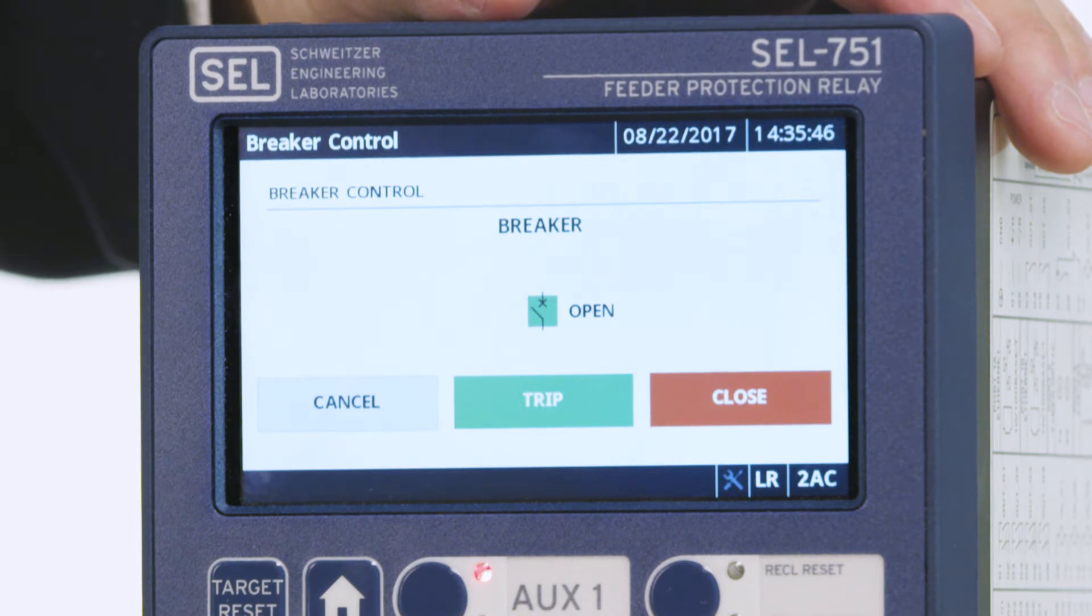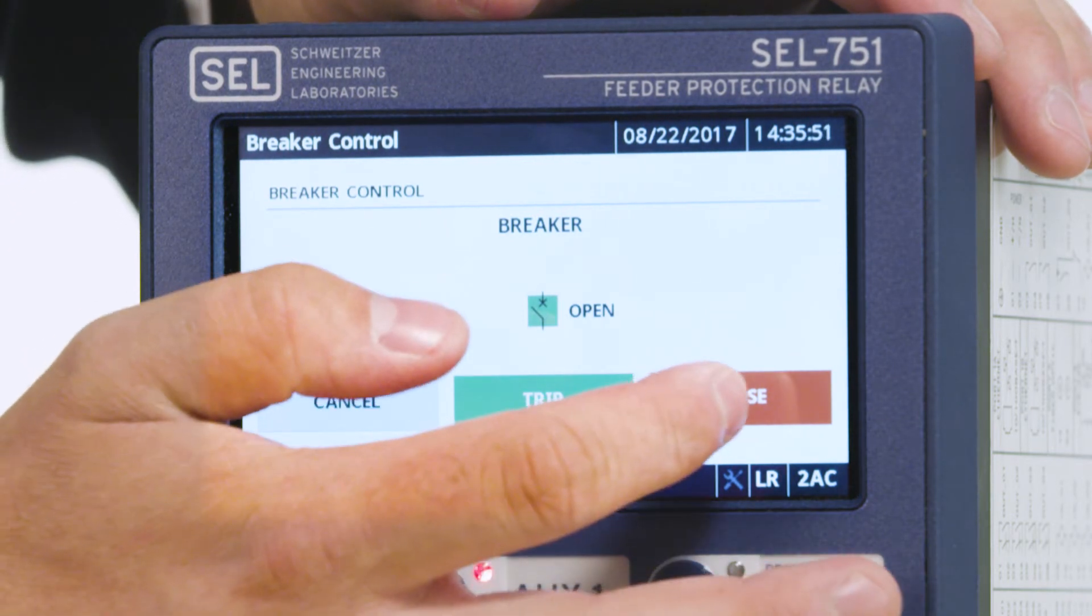As you can see on the display, the breaker is already in an open or tripped state. So let's close the breaker.